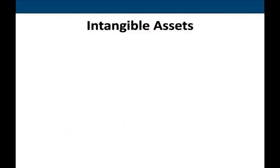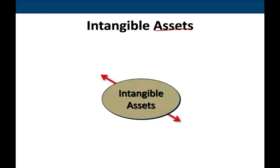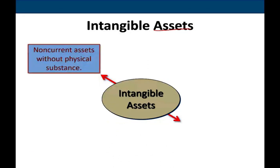So let's start by talking about intangibles. What are intangibles? Intangibles are assets — specifically, they are non-current assets. Non-current means they last more than one period, more than one year. What's special about intangibles is they lack physical substance. You cannot see them, you cannot touch them, versus plant assets.